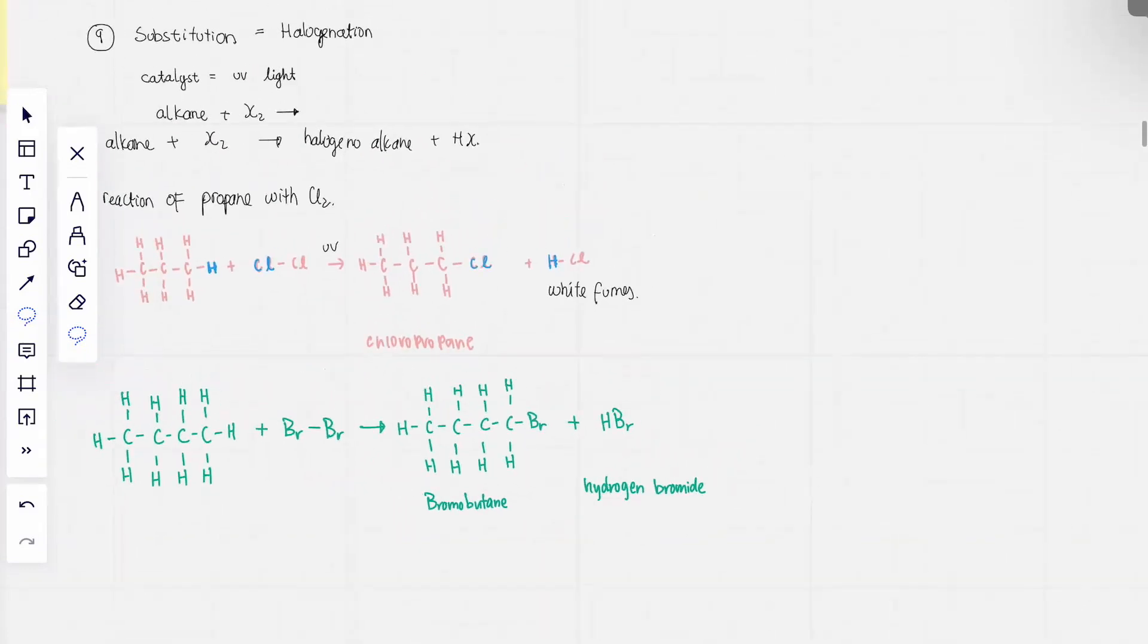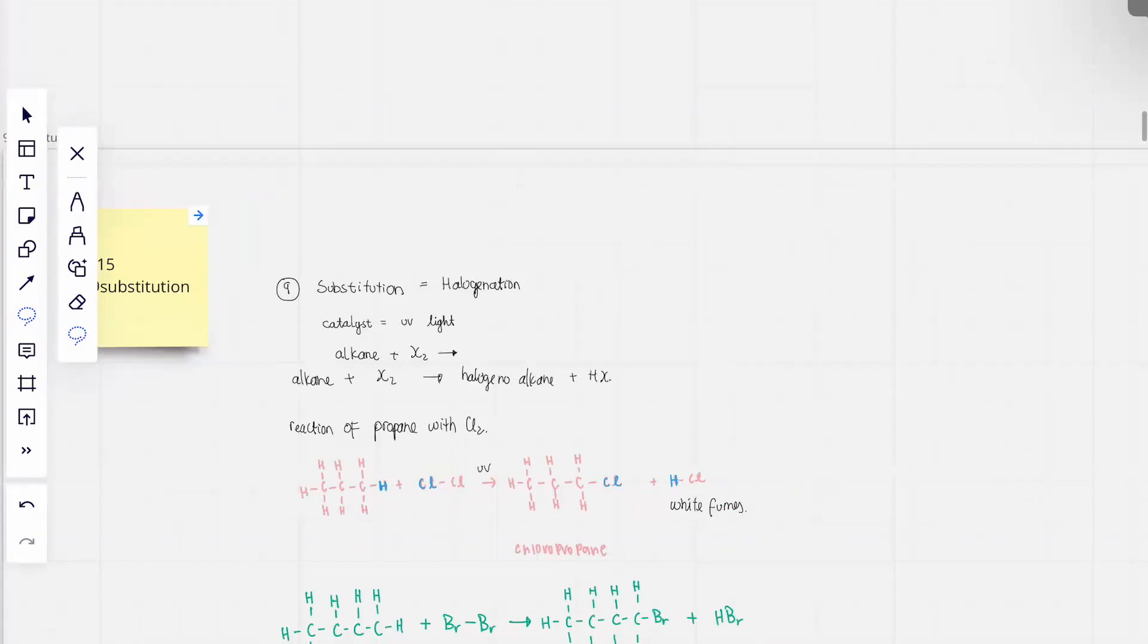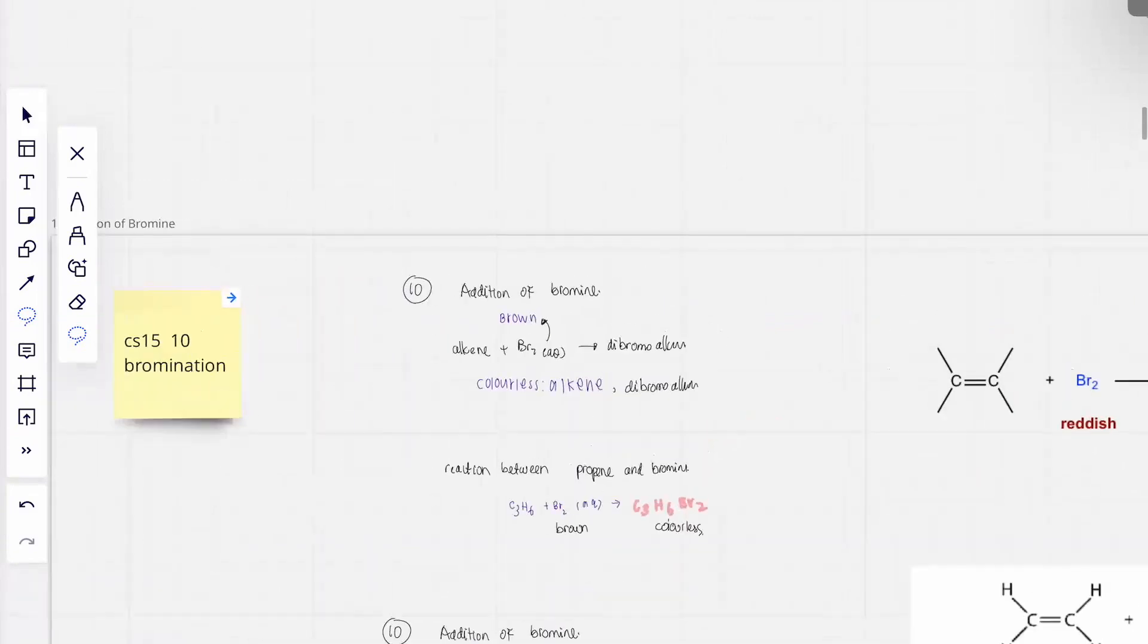So this is substitution. The catalyst is UV light, ultraviolet. Addition of bromine. Yeah, okay.